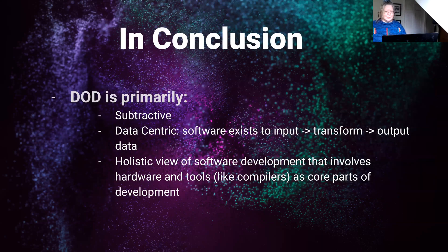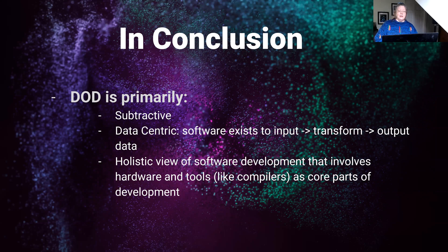In conclusion, data-oriented design is primarily subtractive because it goes back to the basics of computing — the computer exists to input, transform, and output data. It's data-centric because you start designing by considering the data first. And it has a supply chain view — a holistic perspective of software development that includes hardware and compilers and how they impact the data in its transformations.